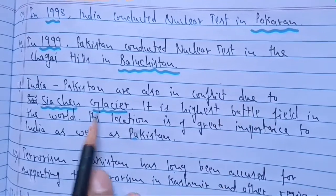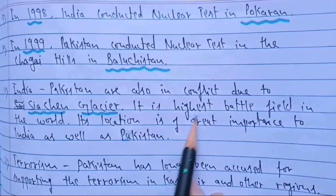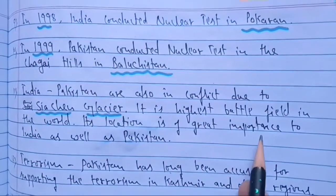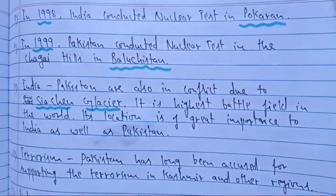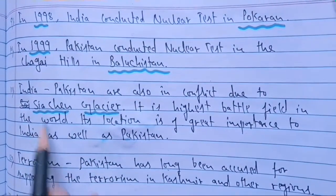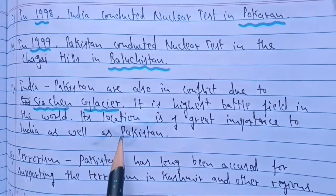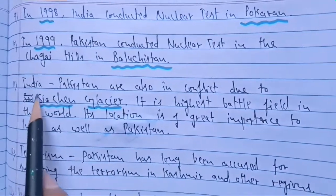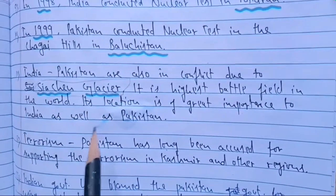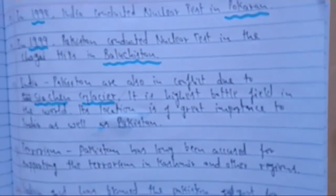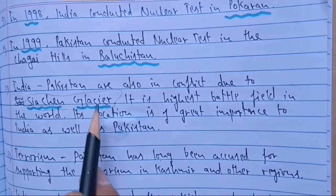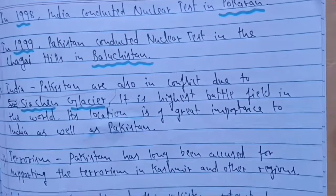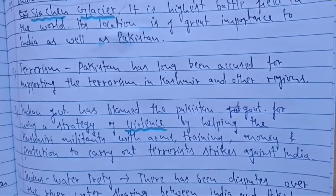India and Pakistan are also in conflict over the Siachen Glacier, which is the highest battlefield in the world. Its location is of great importance to both countries. If Pakistan captures the Siachen Glacier, it will be very easy for Pakistan to connect its boundary with China. So India keeps a close eye on this region to maintain a barrier between Pakistan and China. Siachen Glacier holds significant geographical importance.